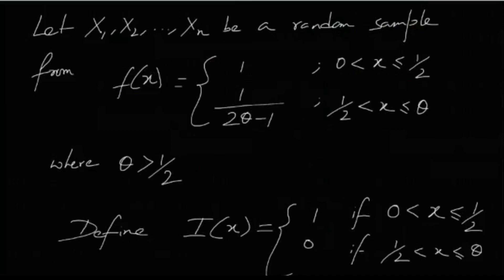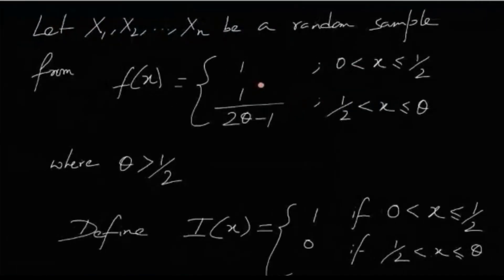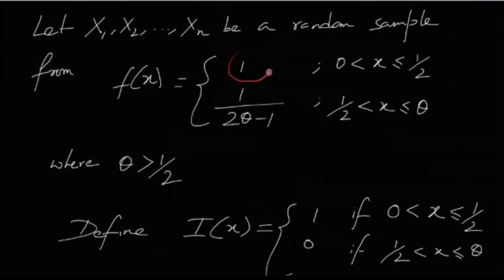Let us define an indicator function i(x): i(x) = 1 if x lies between 0 and 1/2, and 0 if x lies between 1/2 and θ. Using this function, f(x) can be written in a combined form as 1^(i(x)) × (1/(2θ − 1))^(1 − i(x)) for x lying between 0 and θ.